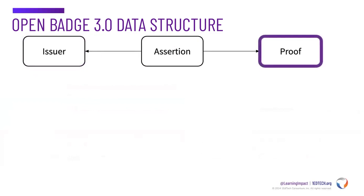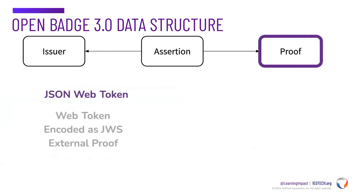A cryptographic proof, or signature, ensures the authenticity and integrity of the credential. OpenBadges version 3 specifies two types of proofs that can be used to sign credentials. The first is a JSON web token. In this format, the credential is encoded into a JWT, which is then signed and encoded as a JWS. The JSON web token proof is called an external proof, because the proof wraps the credential object.